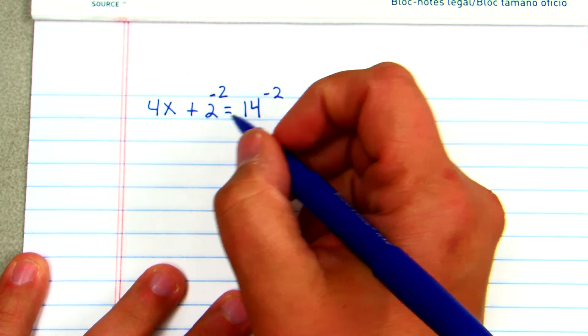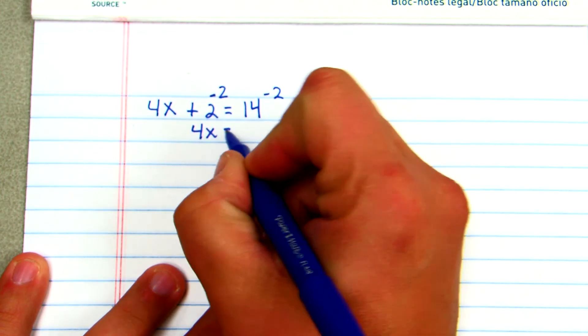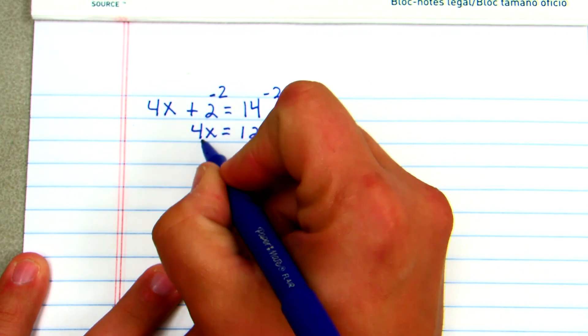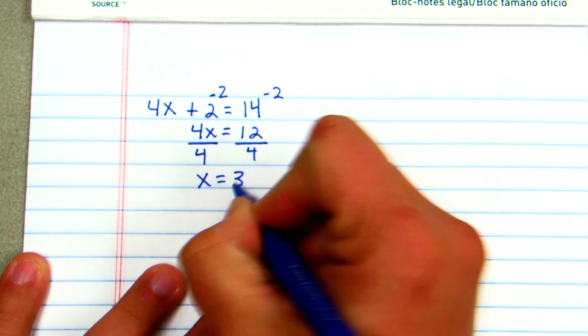What's important to remember is whatever you do to one side of the equation, you must do to the other. That will leave me with 4x equals 12. Then I will divide both sides by 4, and that is going to leave me with x equals 3.